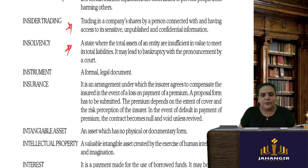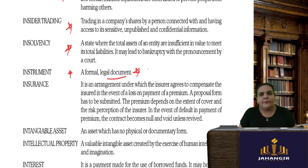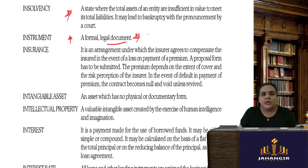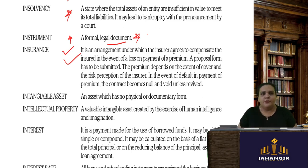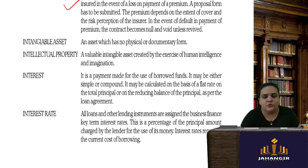Insolvency is the state where your total assets are insufficient to meet your total liabilities, which leads to bankruptcy. An instrument is a formal legal document. Insurance is an arrangement where the insurer agrees to compensate the insured upon an event — you keep paying your premium, and after death, the amount is paid to your beneficiaries and family. Intangible assets are those which cannot be seen, touched, or felt — no physical or documentary form.